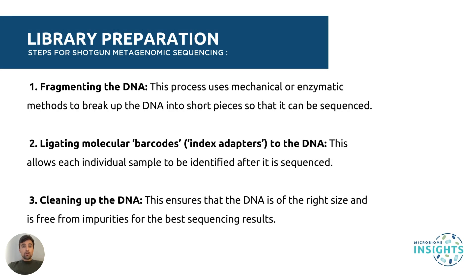With the DNA extracted, we now move on to library preparation, which involves several steps to make the DNA suitable for sequencing. The first is fragmenting the DNA — we break it into smaller pieces using mechanical or enzymatic methods. This is where the term shotgun sequencing comes from, as the DNA is fragmented into many pieces as if shot by a shotgun, and will eventually be stitched back together computationally. Then there's ligating the barcodes: molecular barcodes or index adapters are added to the DNA fragments to track which fragments came from which sample and which bacteria. Finally, cleaning up the DNA ensures that only the DNA of the desired size and purity is kept for sequencing.